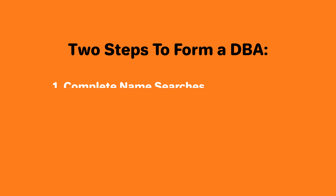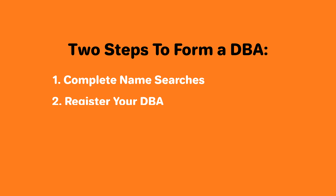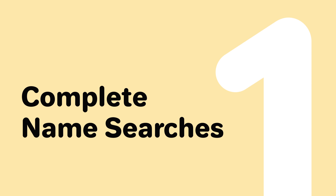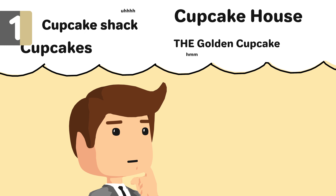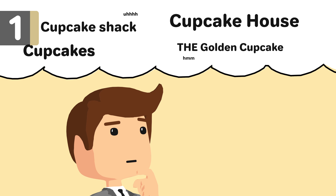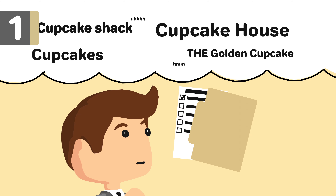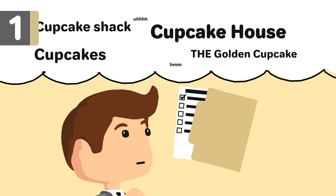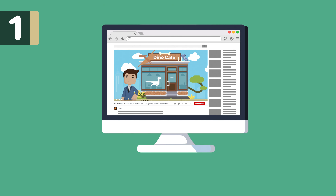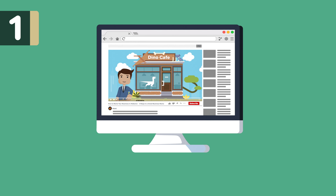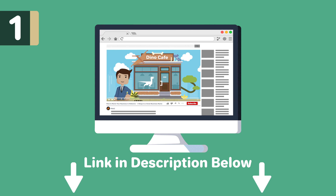Option 1: Do it yourself. If you want to save money, you can form a DBA on your own. The first step is to complete name searches. When determining what you want your DBA name to be, you'll want to make sure you follow Colorado naming requirements. For more details, check out our video, How to Name Your Business in Colorado, or our naming guides linked below.